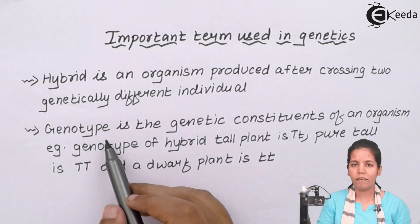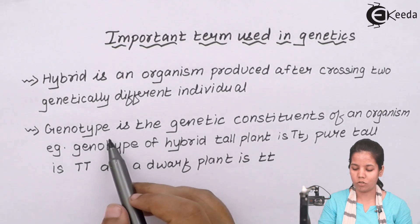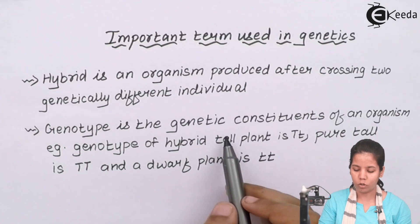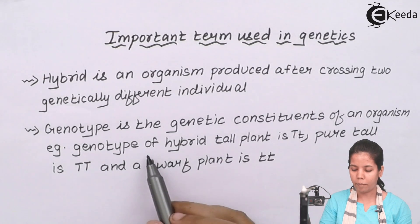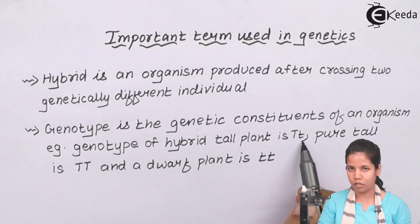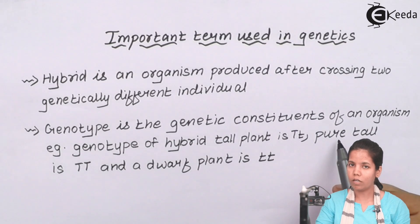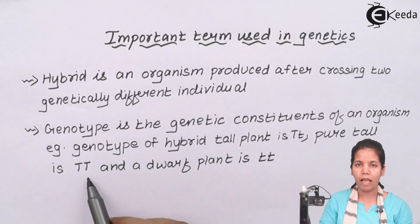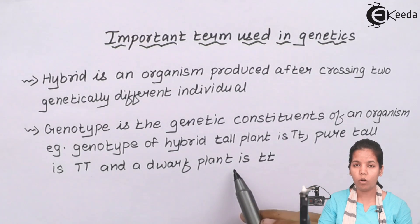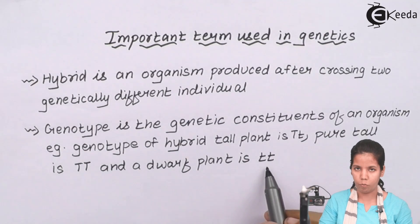Next is genotype. Genotype is nothing but genetic makeup — the internal structure which cannot be seen with the naked eye. For example, the genotype of a hybrid tall plant is capital T and small t, since as a hybrid it is a mixture. The genotype of a pure tall plant, which is homozygous, is capital T and capital T, whereas a pure dwarf plant has small t and small t.